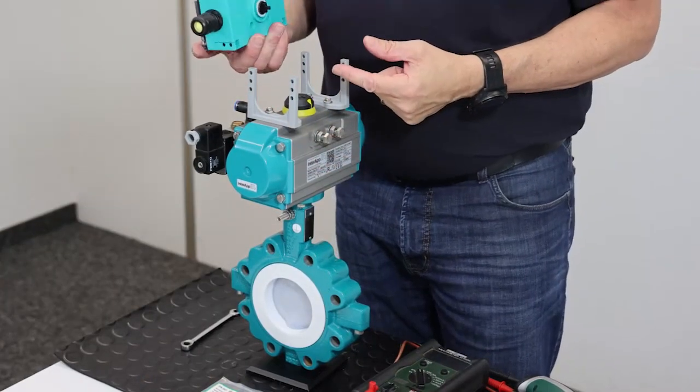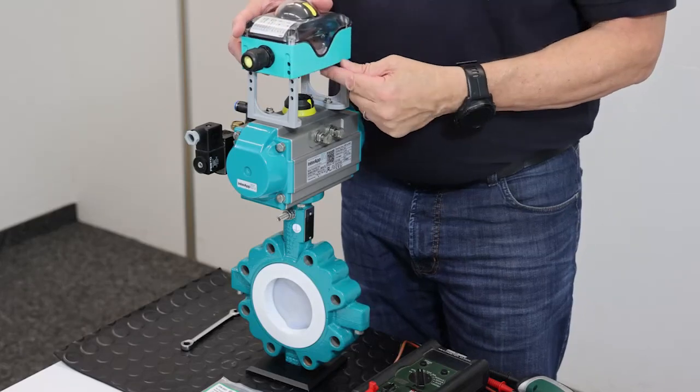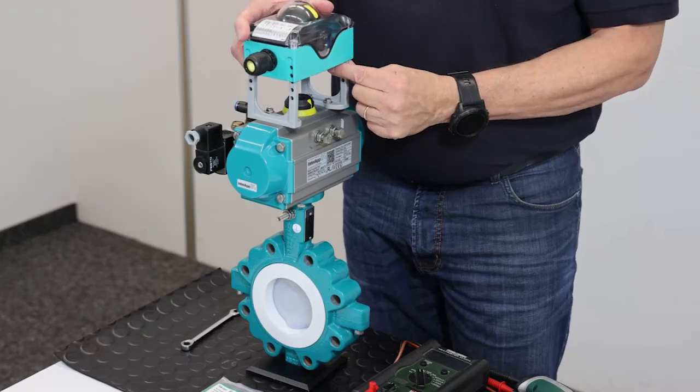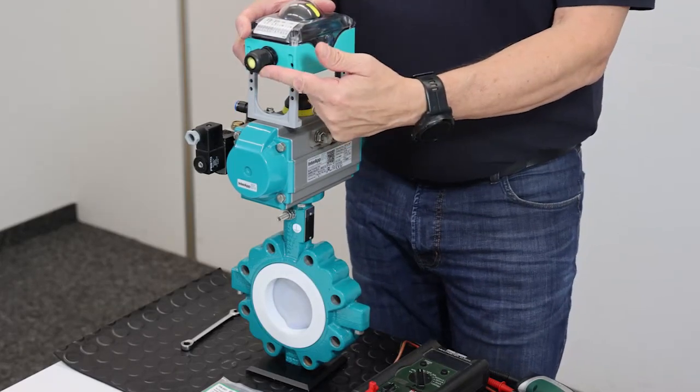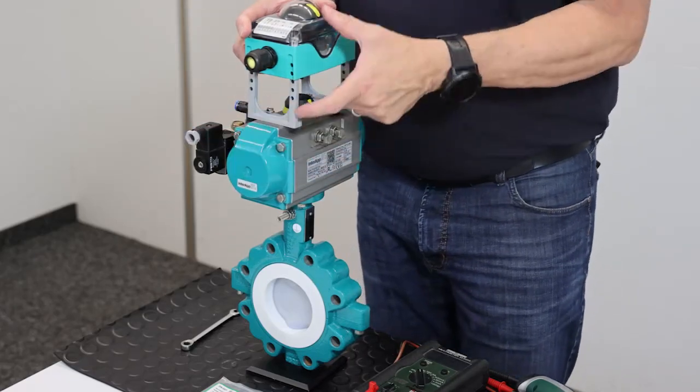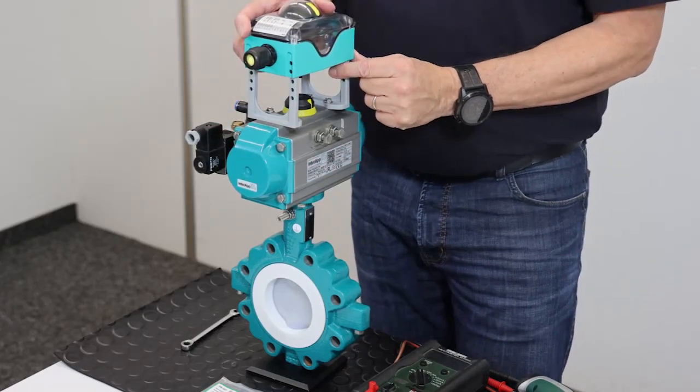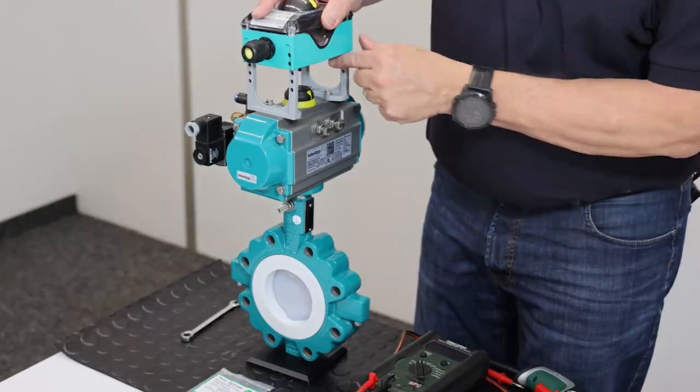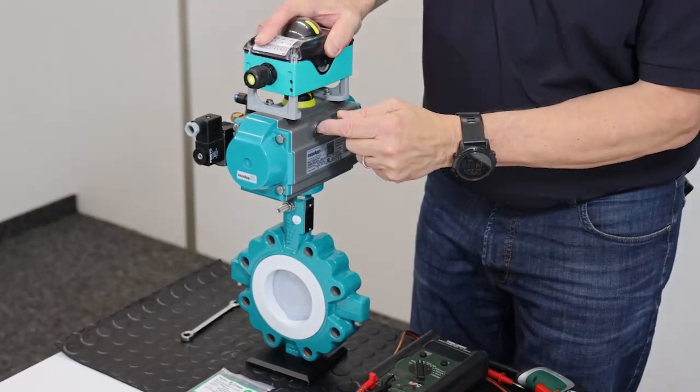The correct position of the limit switch box is that the cable entry of the limit switch box looks in the same direction as the cable entry of the solenoid valve. I mount now the box on top.